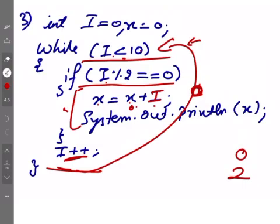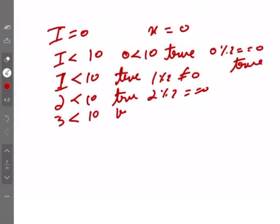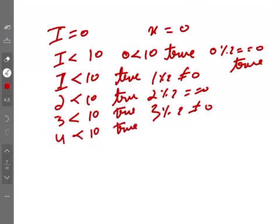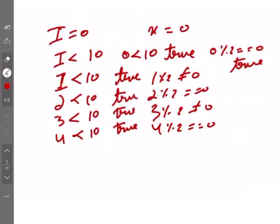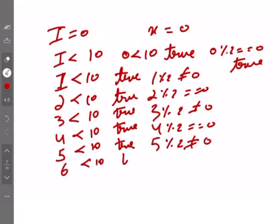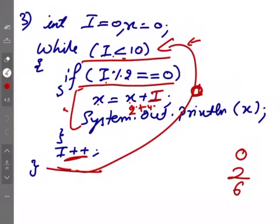Phir I 3 ho gaya, 3 less than 10 true hai lekin 3 2 se divide nahi ho ta, so skip. Phir 4 ho jayega, 4 less than 10 true hai and 4 mod 2 bhi 0 ho ta hai, ho ta hai toh kya karenge x is equal to x plus I. x pishly bar 2 ho gaya tha, I abhi 4 hai, so 2 plus 4 will be 6, so x ki new value 6 ho jayegi aur woh print ho jayegi. Phir I ho jayegi 5, 5 less than 10 is true lekin 5 mod 2 equal to 0 nahi ho ta. Phir I 6 ho jayegi, 6 less than 10 true hai and 6 2 se divide bhi ho ta hai, ho ta hai toh kya karenge x is equal to x plus I. x ki puranhi value 6 hai, I ki value abhi 6 hai, toh 6 plus 6 12 ho jayegi, toh x ki new value ho jayegi 12 aur woh print ho jayegi.